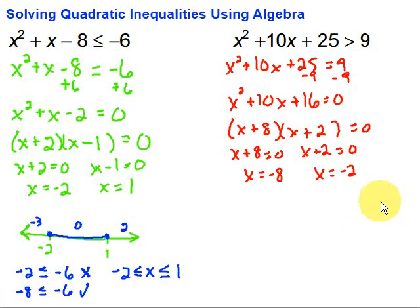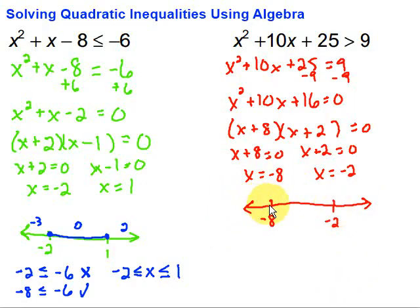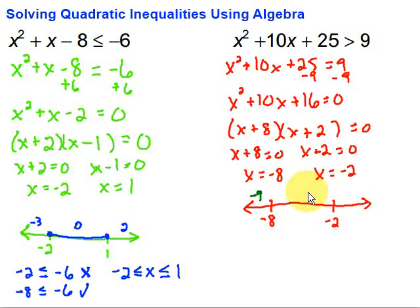Using the zero product property: x plus 8 equals 0 gives x equals negative 8, and x plus 2 equals 0 gives x equals negative 2. That again divides our number line into three pieces: less than negative 8, between negative 8 and negative 2, and greater than negative 2. I'll choose test values: negative 9 for the left section, negative 3 for the middle, and 0 for the right section.